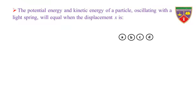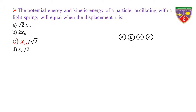The potential energy and kinetic energy of a particle oscillating with SHM will be equal when the displacement x is: Option A: √2·x₀. Option B: 2x₀. Option C: x₀/√2. Option D: x₀/2. The key is x₀/√2. Therefore, the correct option is C.